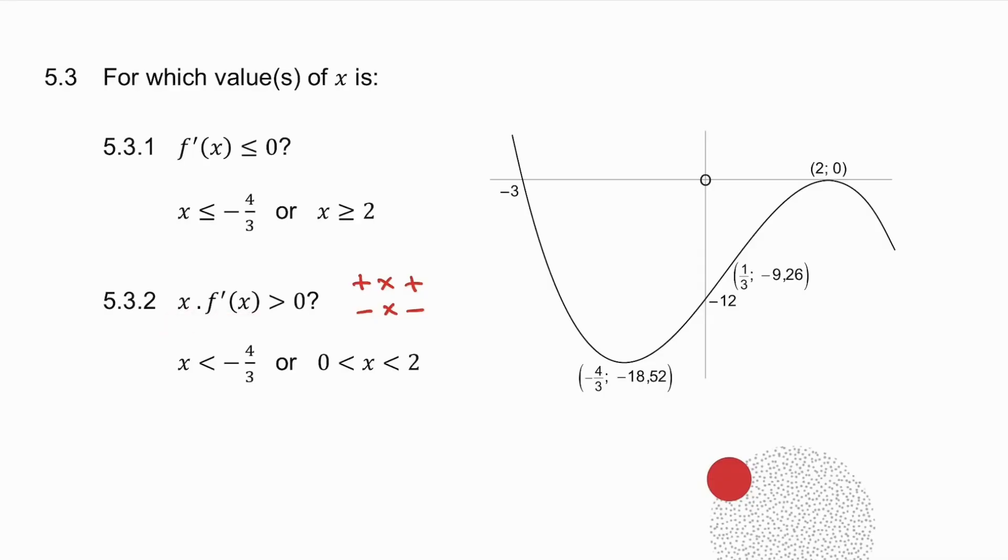So if I start off by taking negative values of x, in other words, I only consider the left-hand side of the y-axis. Where is my gradient negative? It's there, when x is less than minus 4 over 3.